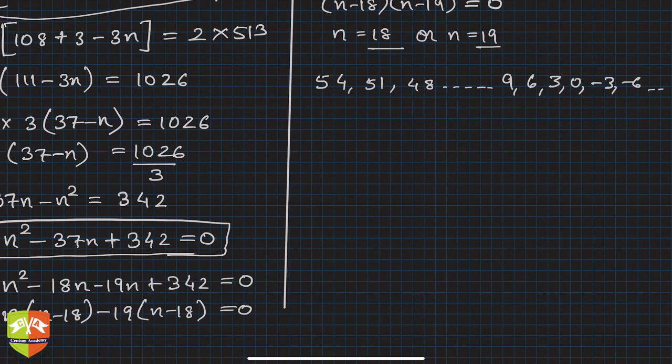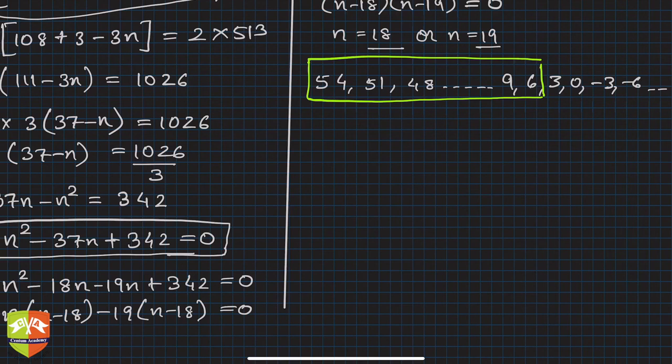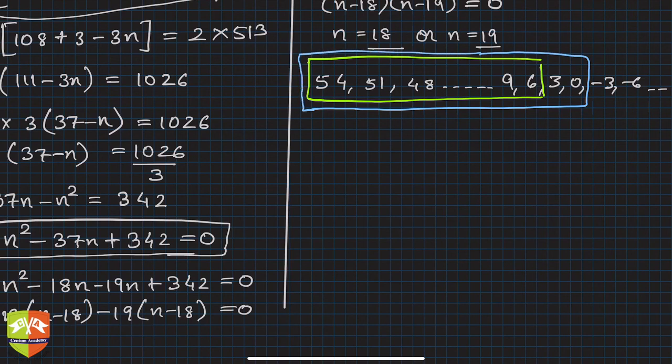Now if you see, sum of these many terms or sum of these many terms is the same. Why? Because there is one term which is 0, so addition of 0 will not impact the sum. Hence, I have to correct this - till 3, not till 6.